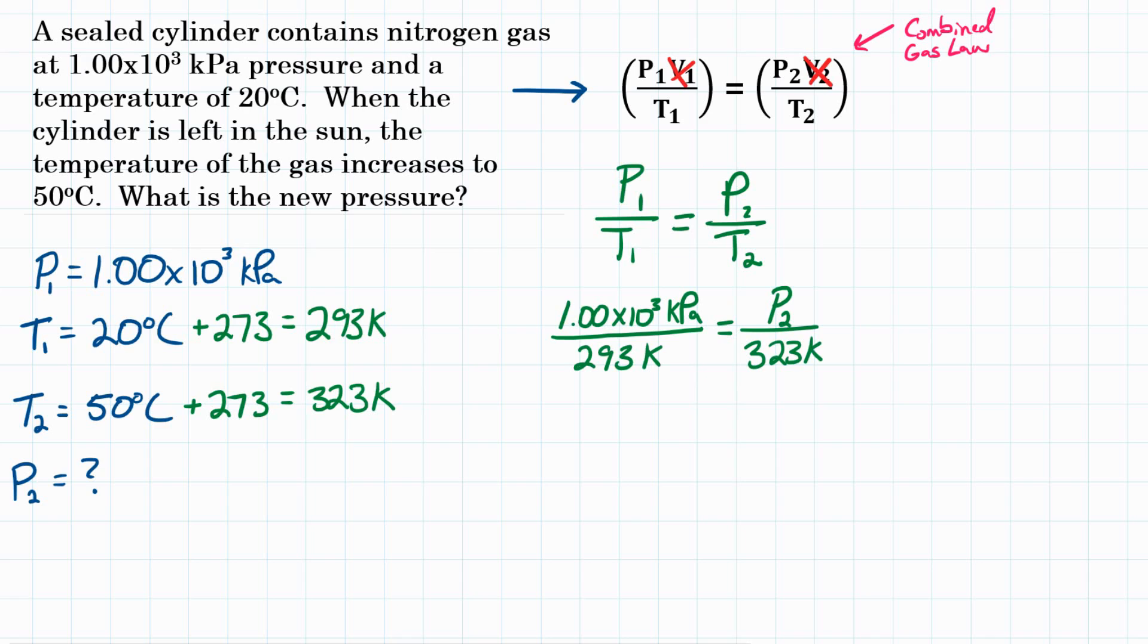So let's isolate for our variable. How do we do that? Well, we need to get P2 by itself. So let's multiply by 323 Kelvin on both sides. And that will effectively cancel out everything else on the right side besides P2, which we're solving for.